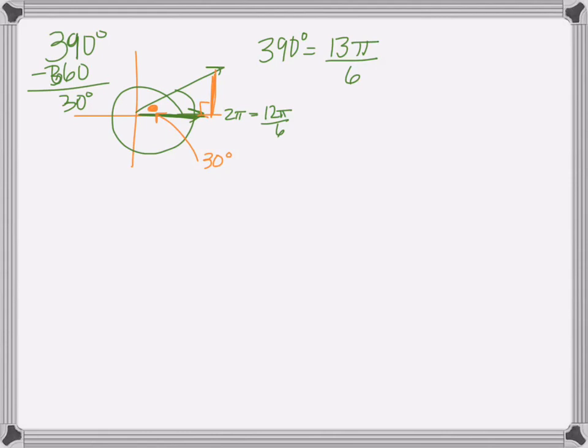So that is how you graph angles in a coordinate plane, and then quickly just being able to logically find the reference angle, therefore finding what the radian measure would be.